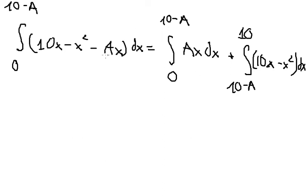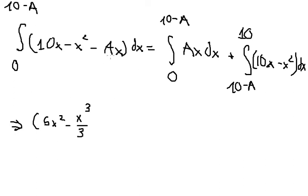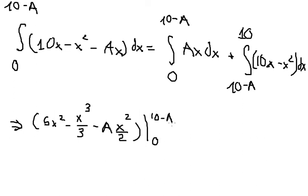Now we calculate. The integral of 10x gives 5x squared. The integral of x squared gives x cubed over 3. The integral of Ax gives Ax squared over 2. We evaluate these with the bound from 0 to 10 minus capital A.